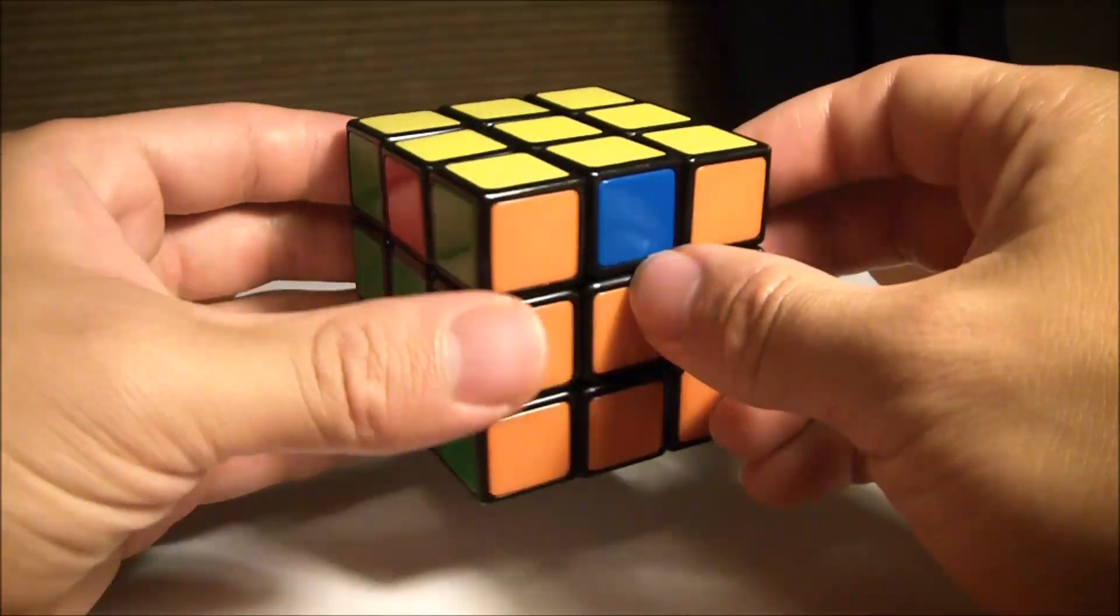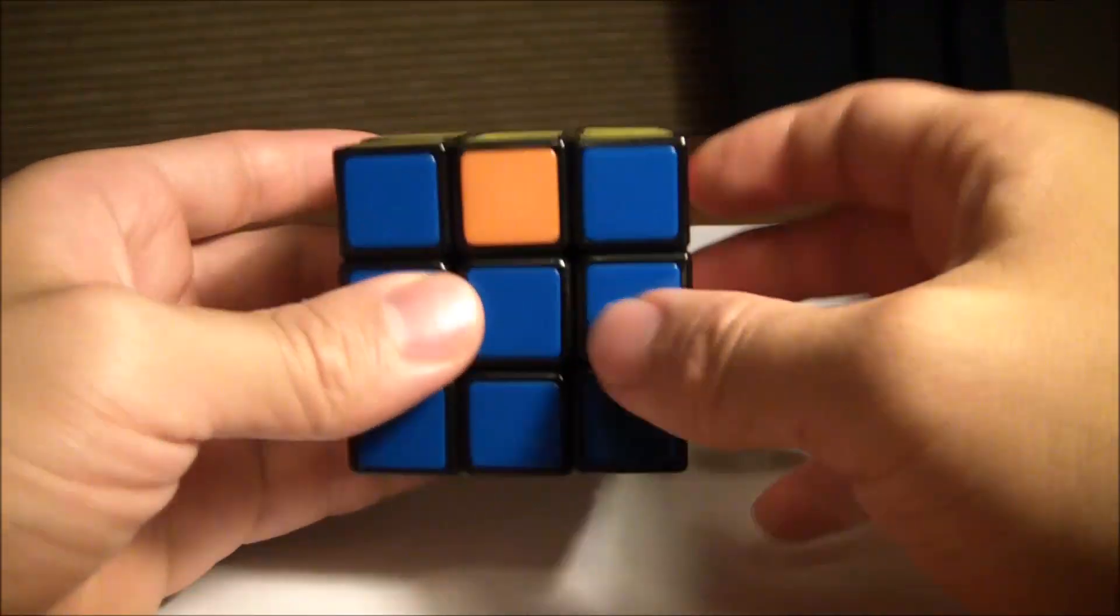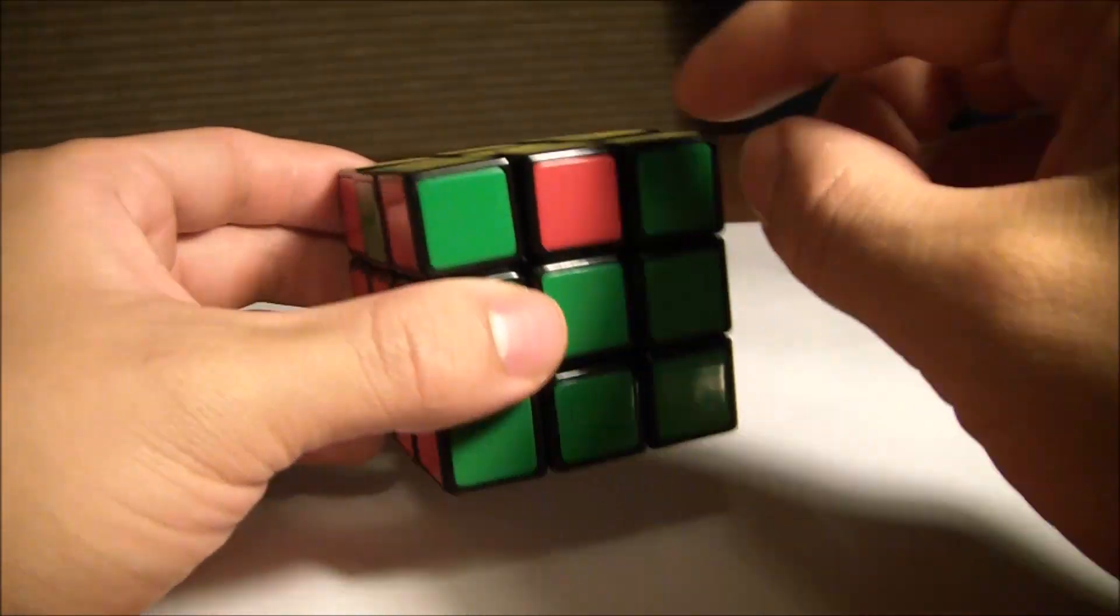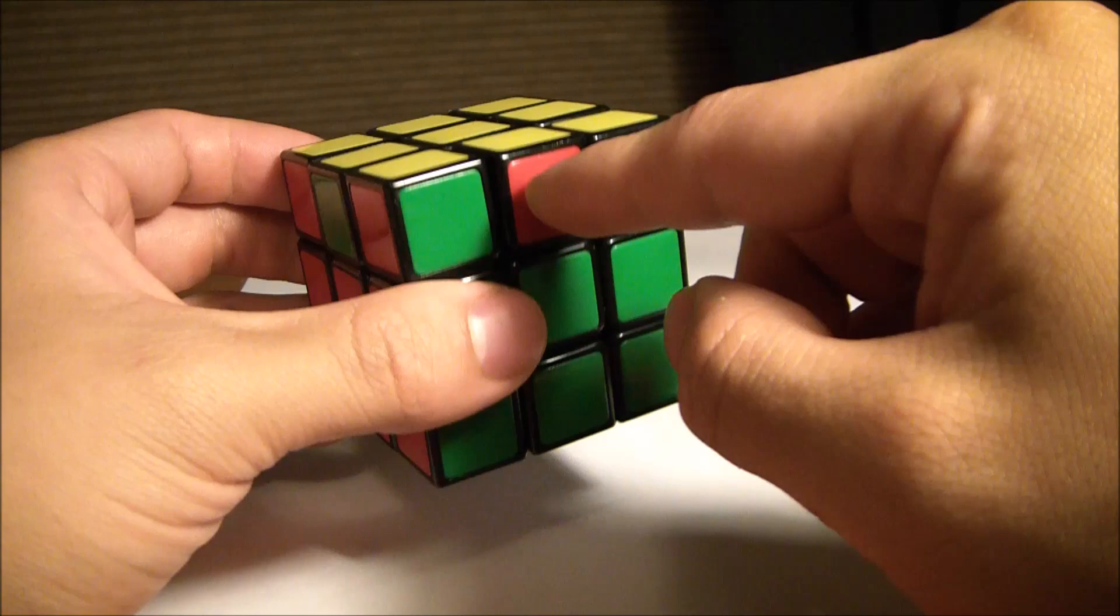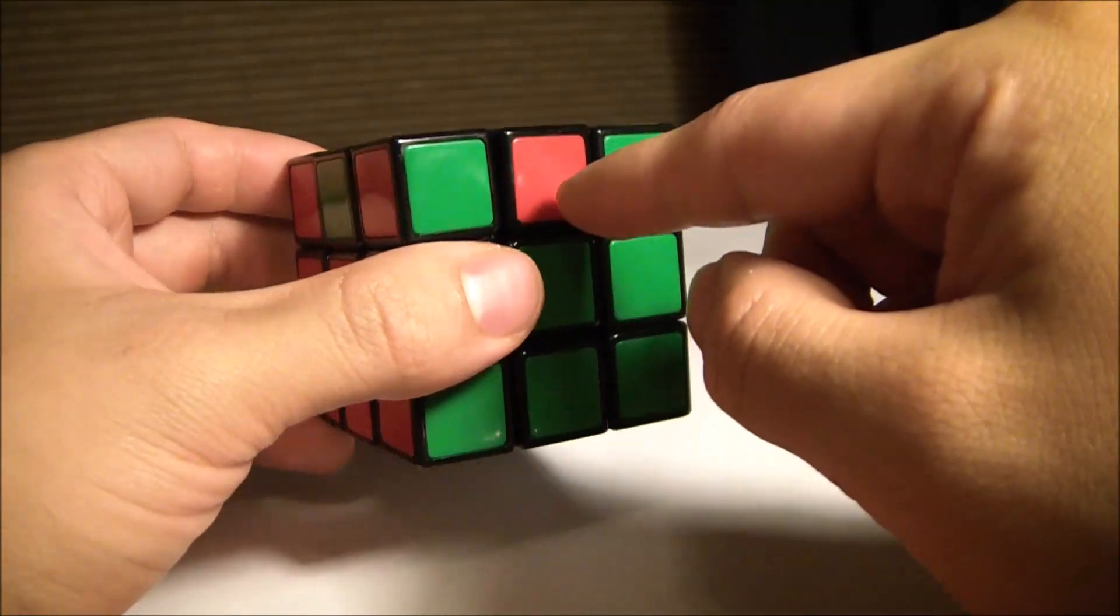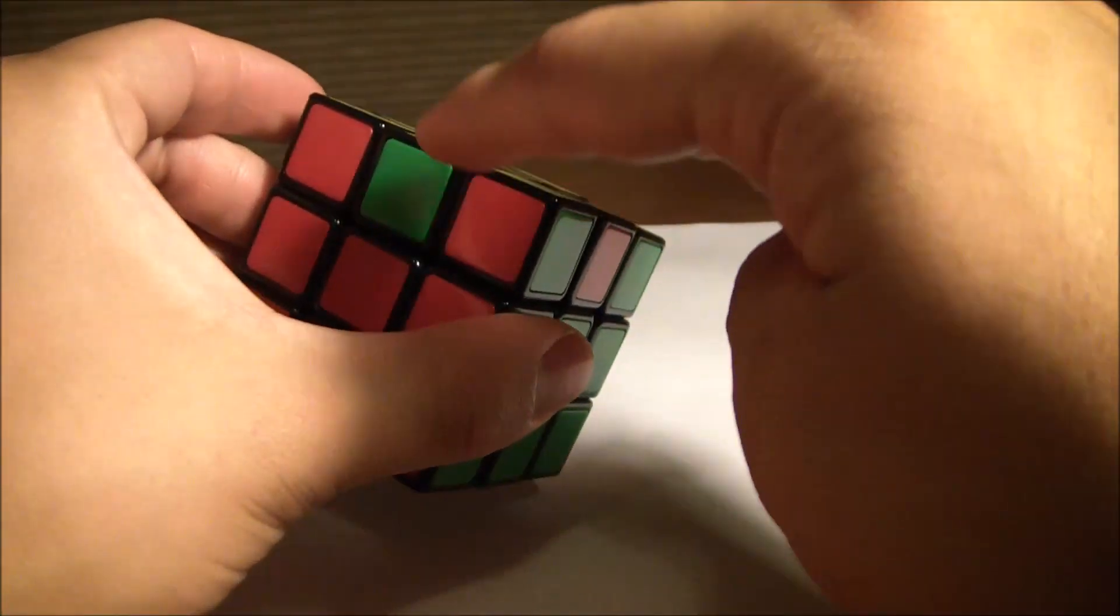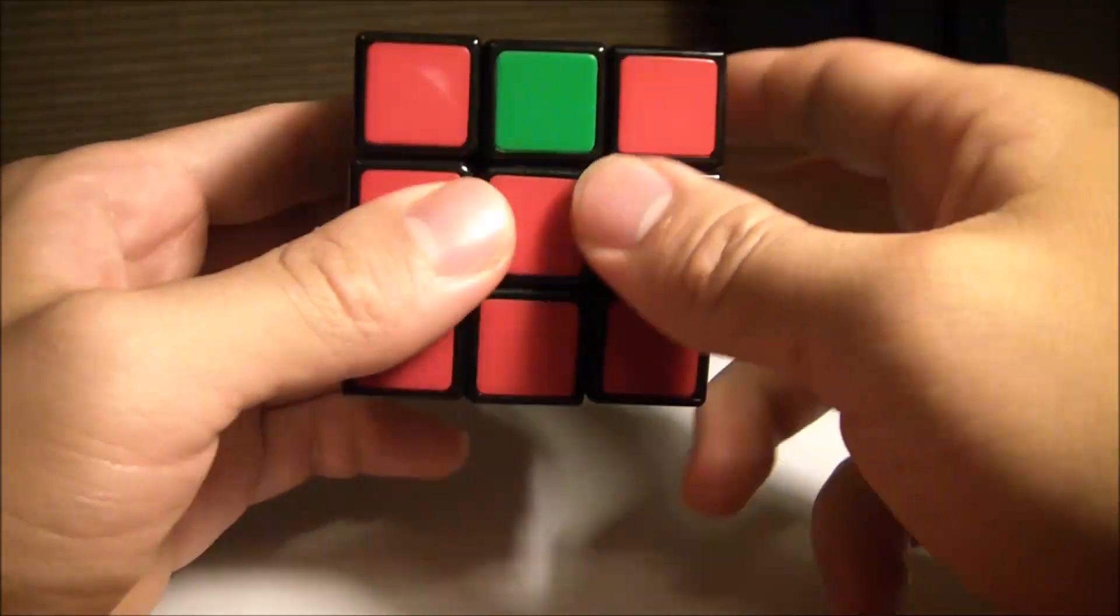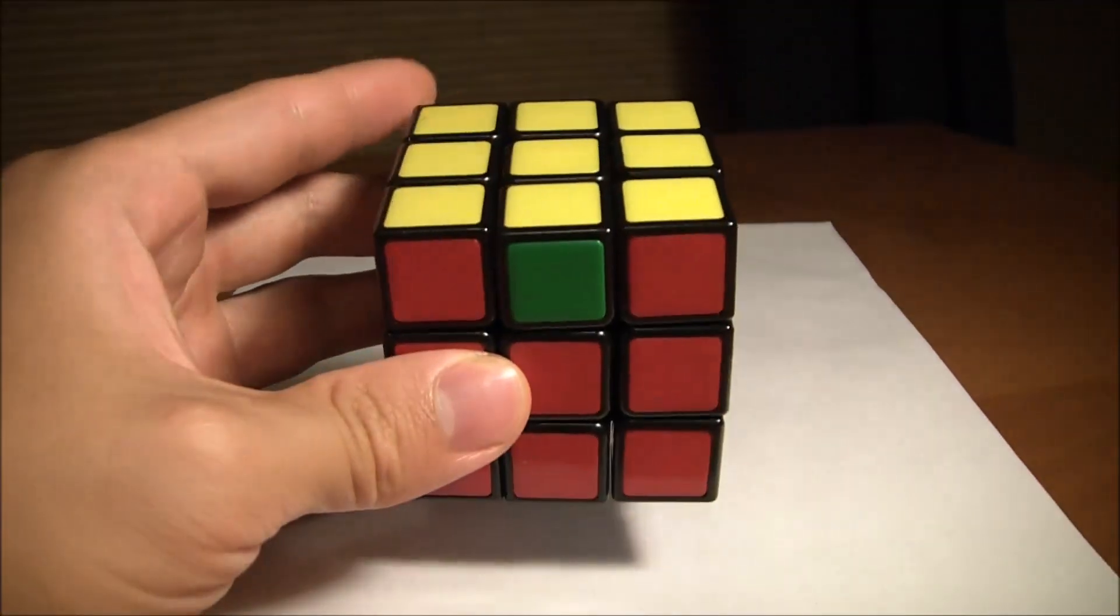If you look at it, all the corner pieces are now in their correct spots. The only thing you need to solve now are the edge pieces—this has to go over here, this has to go over here—and you just have to change them. That's the next tutorial.